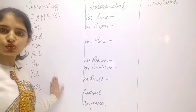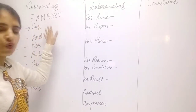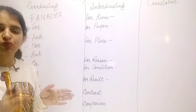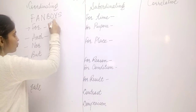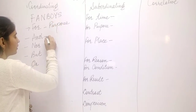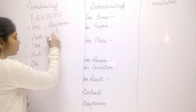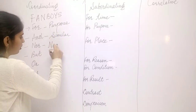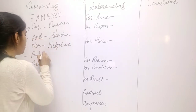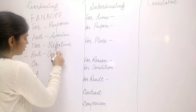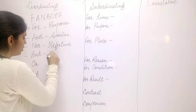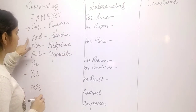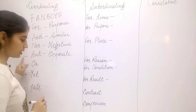'For' is used for reason — to join two words or sentences for similar things; it indicates purpose or reason. 'And' is used to join words or sentences of a similar kind — the same type. 'Nor' is used in negative sentences. 'But' is used for contrast — meaning opposite: if we have an opposite point of view, we use 'but.'